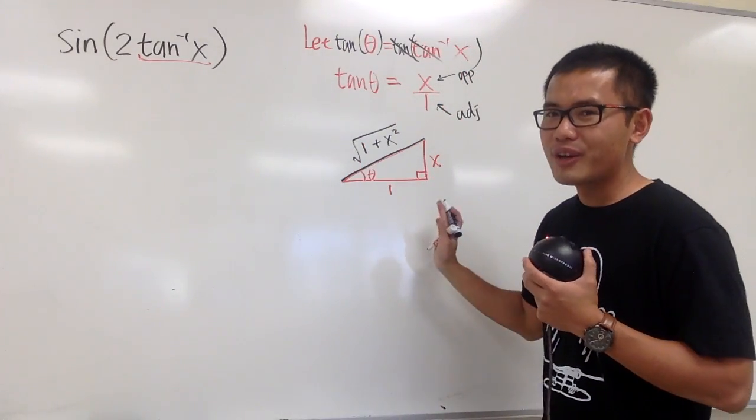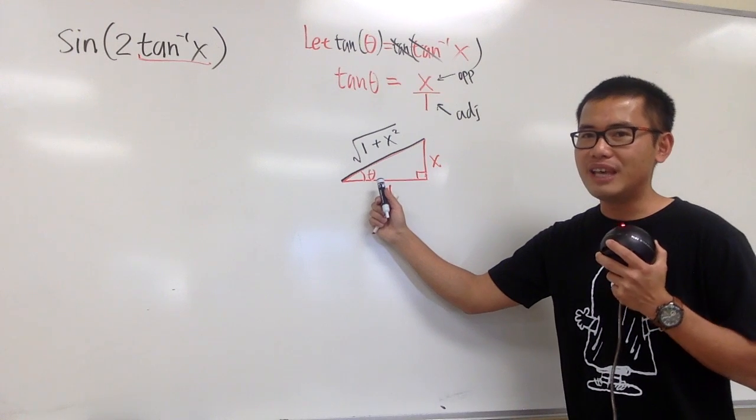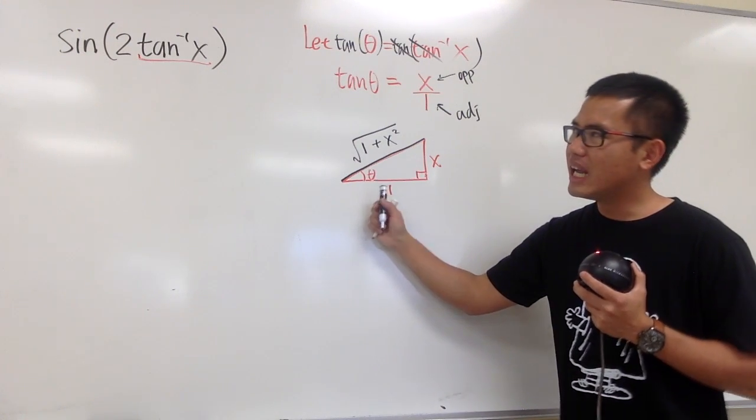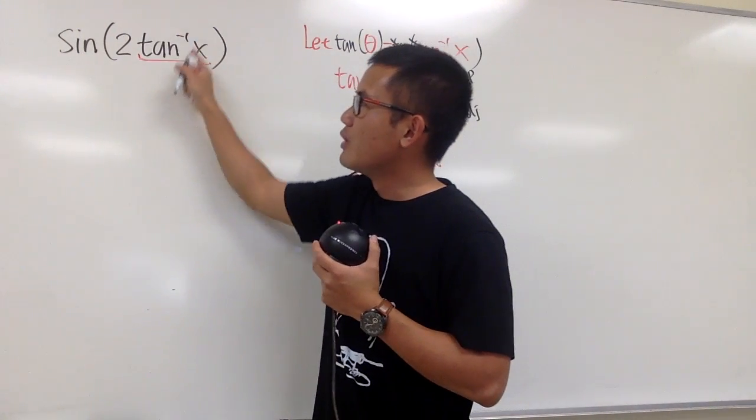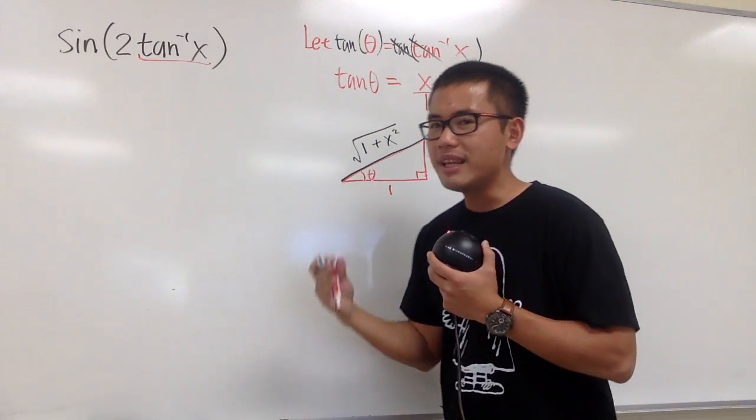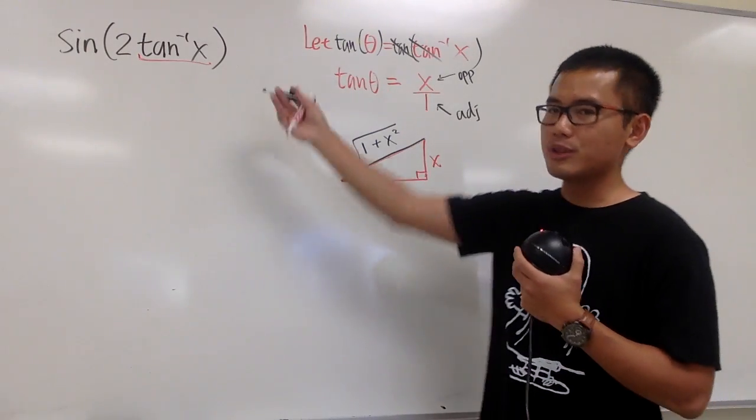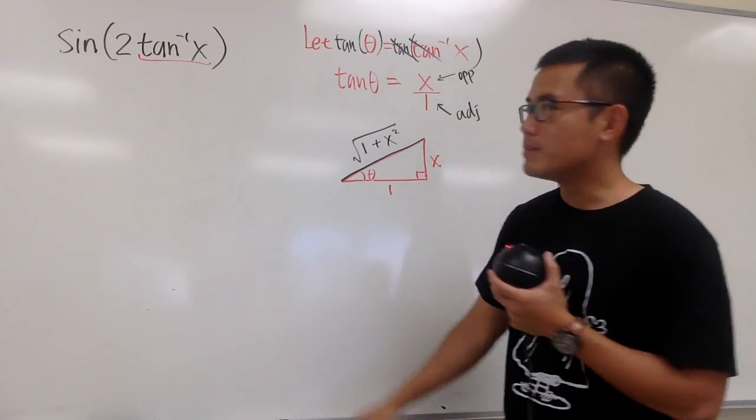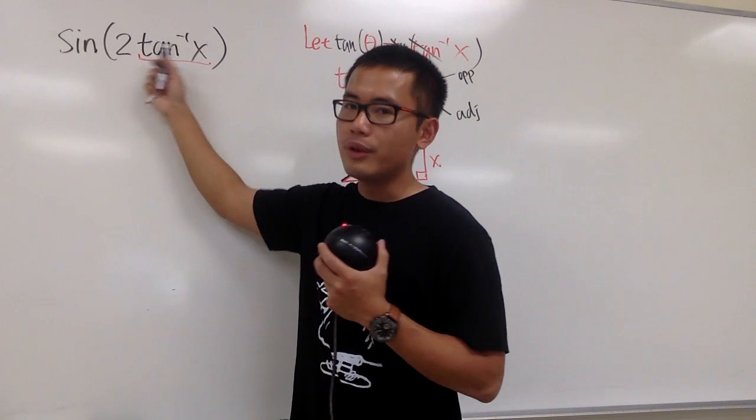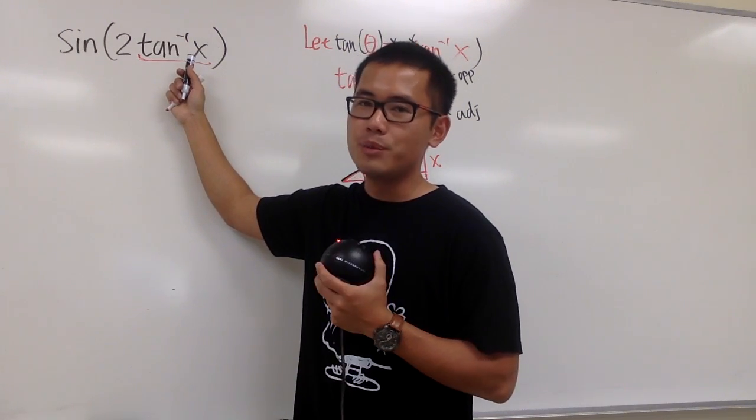Unfortunately, this picture here is only good for when we have the angle theta. Over here, this is technically 2θ inside, so I cannot use this picture to help me out directly. However, we know sin(2θ), we have a double angle formula for that.